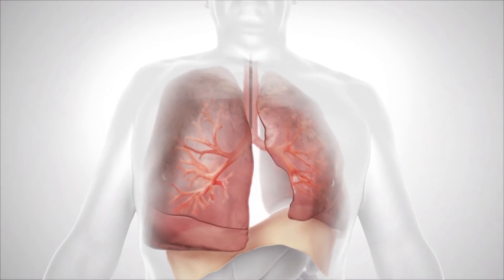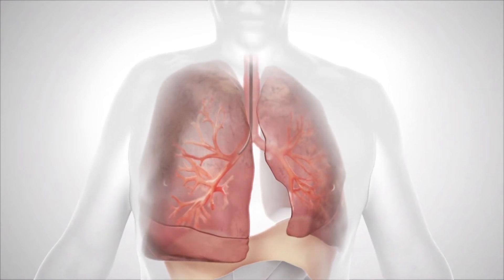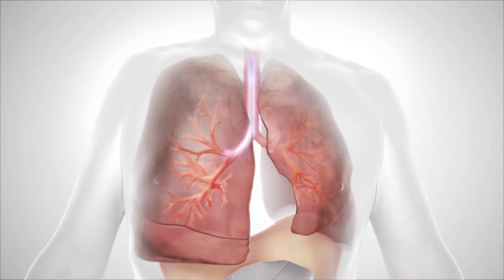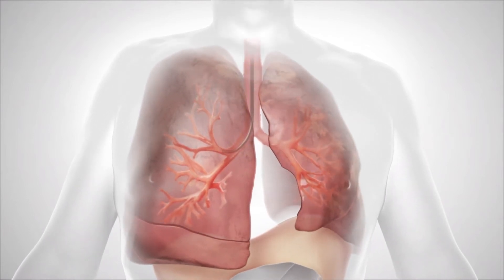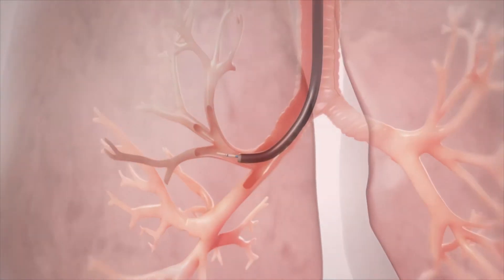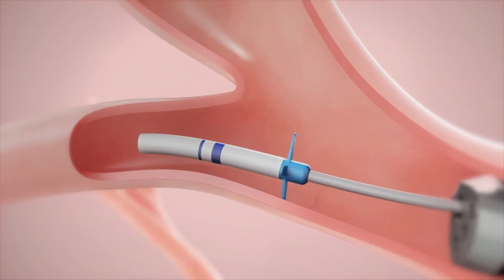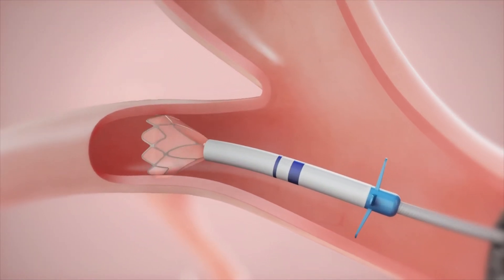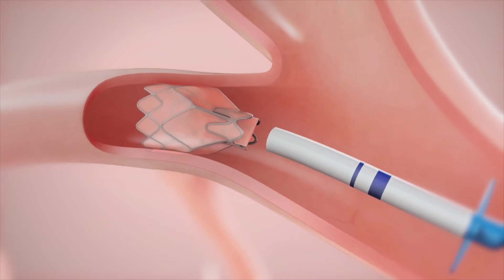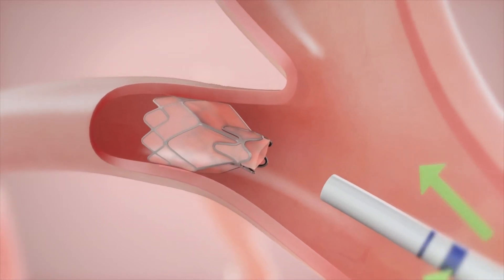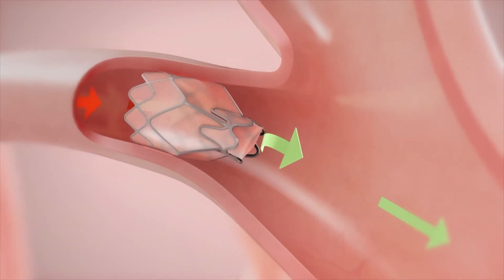The Zephyr valve procedure is performed under general anesthesia or conscious sedation, where a standard bronchoscope and flexible delivery catheter are used to guide the valves into the target lobe and desired airway. Multiple valves are implanted to ensure complete occlusion of all airways leading to the target lobe of the lung.